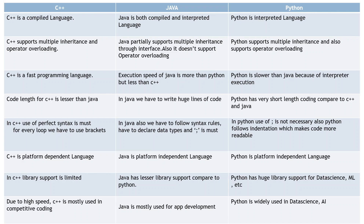The fourth difference is code length. C++ code length is lesser than Java's, and in Java you have to write huge lines of code. Python, on the other hand, is pretty straightforward, very easy, requires indentation, and only a very short form of coding. You do not even have to use semicolons in Python.